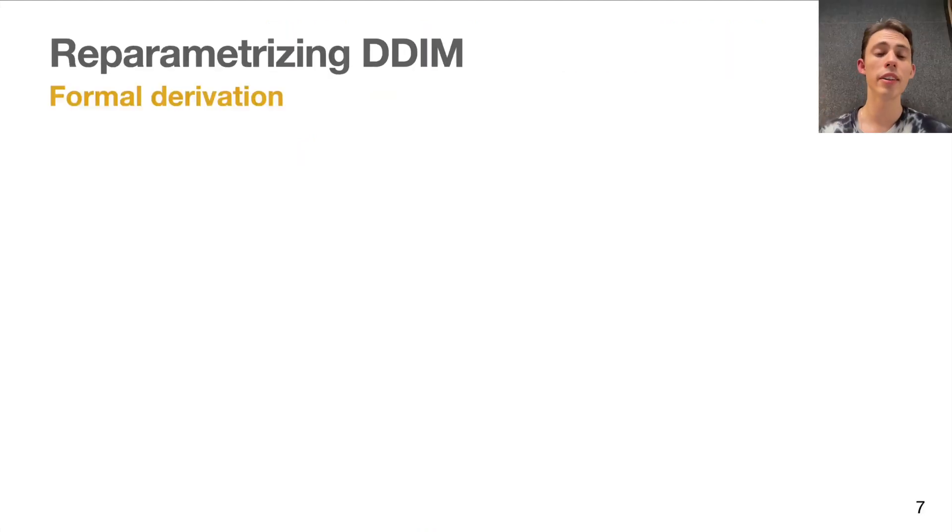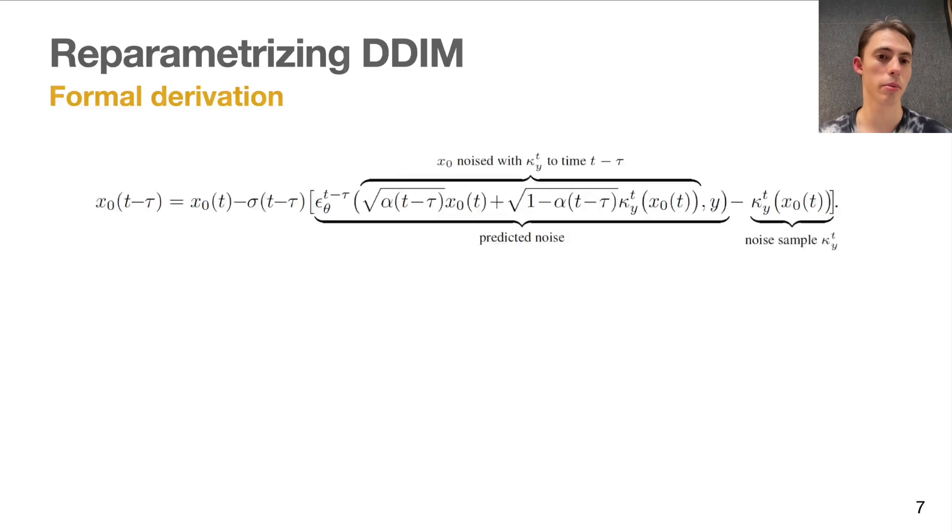You can find the formal derivation in the paper. But the most important takeaway is that reparametrizing DDIM to this variable ends up with an update rule containing kappa. And kappa is a noise term that we add to the image on each step of score distillation.